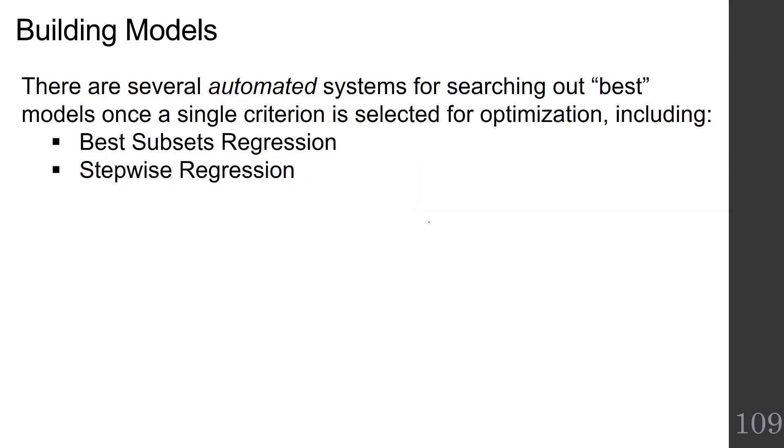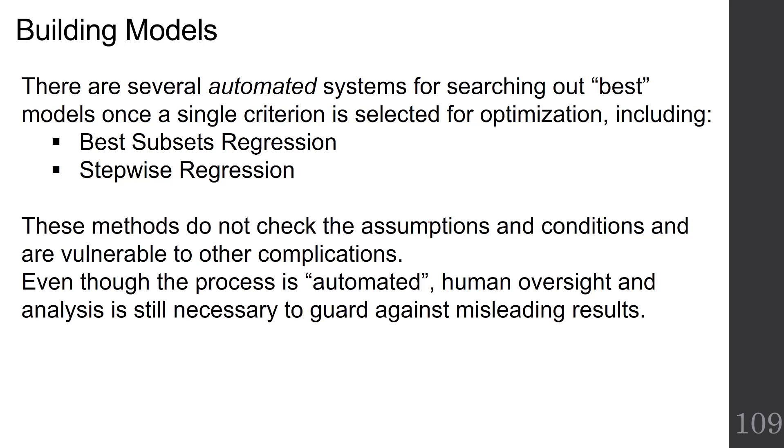There are several automated ways that you can search out for your best model once a single criterion is selected for optimization, and two common ways are called best subsets or stepwise regression. Keep in mind, if you use these, that these methods do not check the assumptions and conditions and are vulnerable to other complications. And even though the process is automated, human oversight and analysis is still necessary to guard against misleading results.